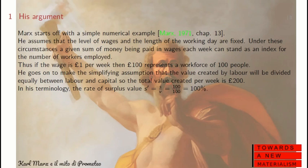He assumes that the level of wages and the length of the working day are fixed. Under these circumstances, a given sum of money being paid each week in wages can stand as an index or alias for the number of workers employed. So if the wage is £1 a week, £100 represents a workforce of 100 people. He goes on to assume that the value created by labour will be divided equally between labour and capital, so the total value created per week will be £200. In his terminology, the rate of surplus value S' equals S over V, which is 100 over 100, or 100%.